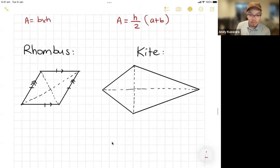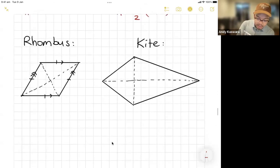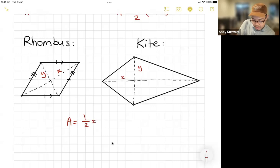Okay. If we get to a rhombus and a kite, I put these ones together because if we're, especially if we're given what we call the diagonals, we call the diagonals usually x and y.